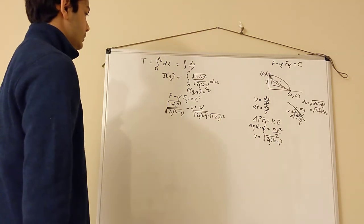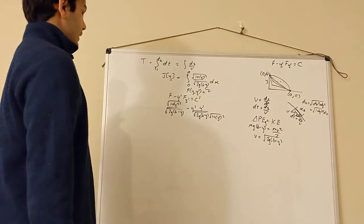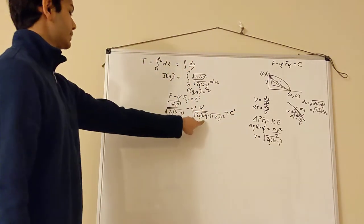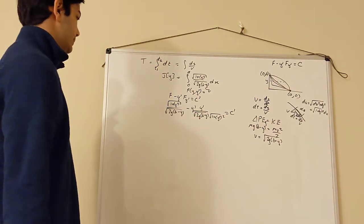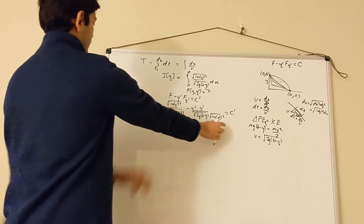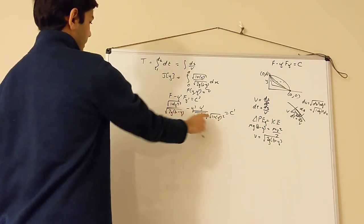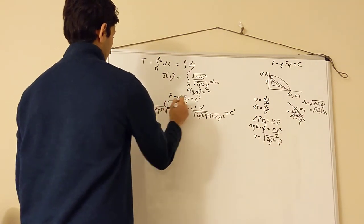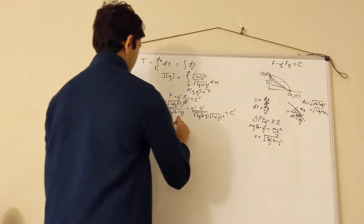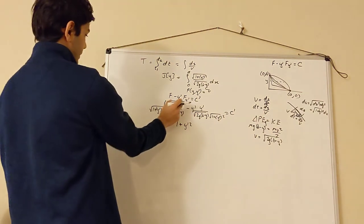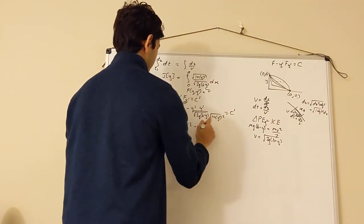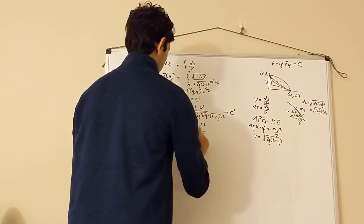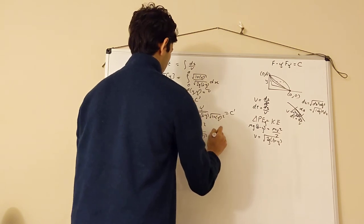This all equals c'. We want to combine the denominators and put these two fractions into one. Both terms share the factor √(2g(b − y)), so we multiply the numerator and denominator of the second term by √(1 + y'²). After squaring and combining, the numerator becomes (1 + y'²) minus y'²(1 + y'²) from the second term... wait, simplifying: we get (1 + y'²) minus y'² in the numerator, all divided by √(2g(b − y)) · √(1 + y'²), equal to c'.